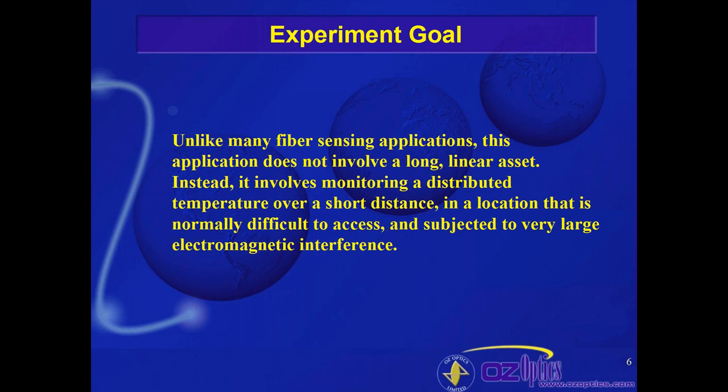Unlike many fiber optic distributed sensing applications — whether for strain, temperature, or acoustic sensing — what we're dealing with here is a relatively small volume; we're looking only inside a generator. Most fiber optic distributed sensing applications are used for monitoring long assets such as pipelines or overhead power cables, or large structures such as bridges or roadways. This is a somewhat different type of application: something limited in size, but very difficult to monitor by other means.